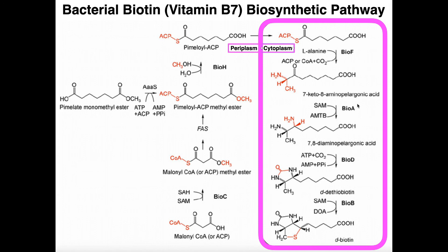The next enzyme is BioA, probably the first one discovered. This one uses S-adenosylmethionine in an unusual manner — instead of transferring a methyl group, it uses SAM to transfer an amino group. The carbonyl at that position is replaced with an amine, and that gives us 7,8-diaminopelargonic acid, catalyzed by BioA.